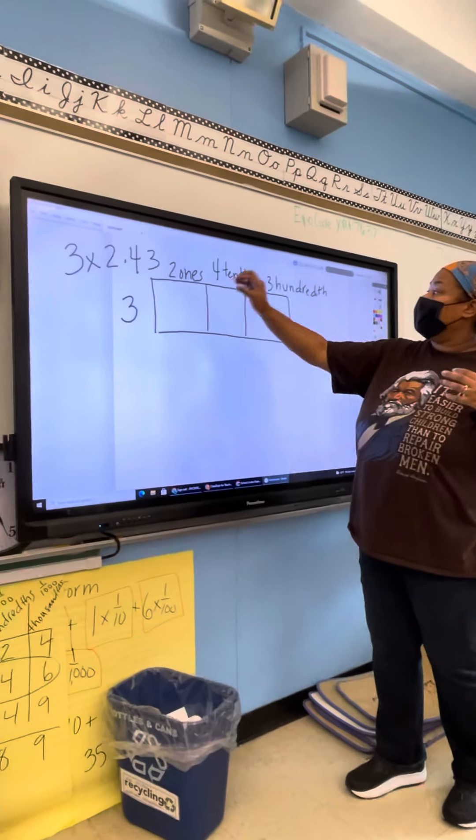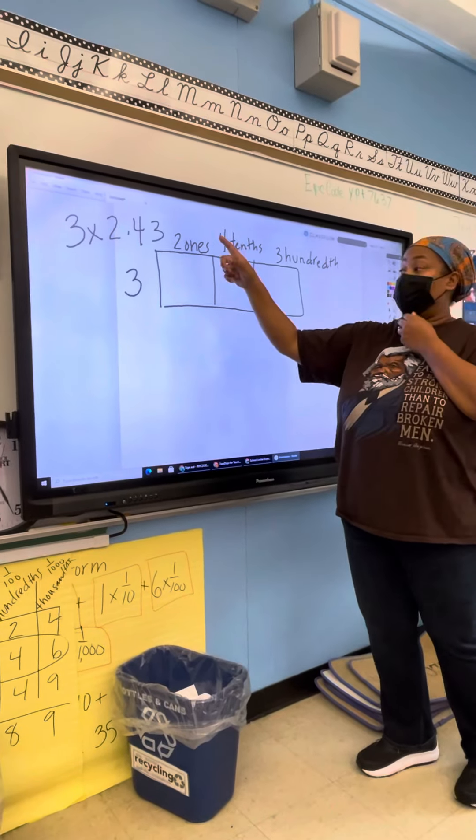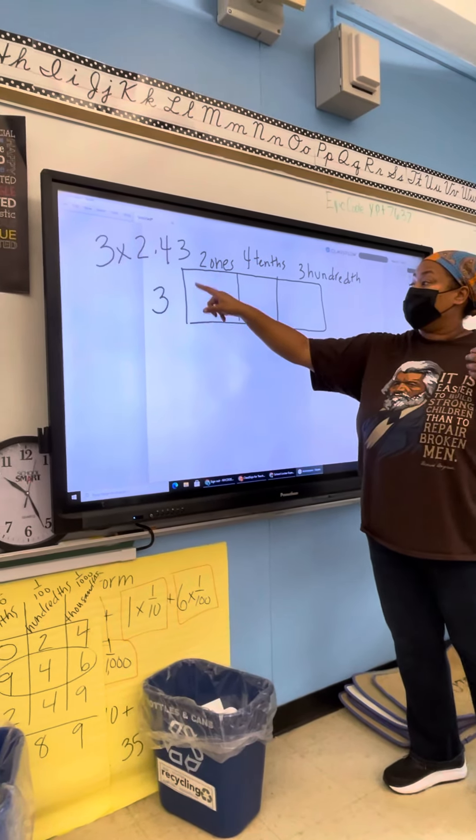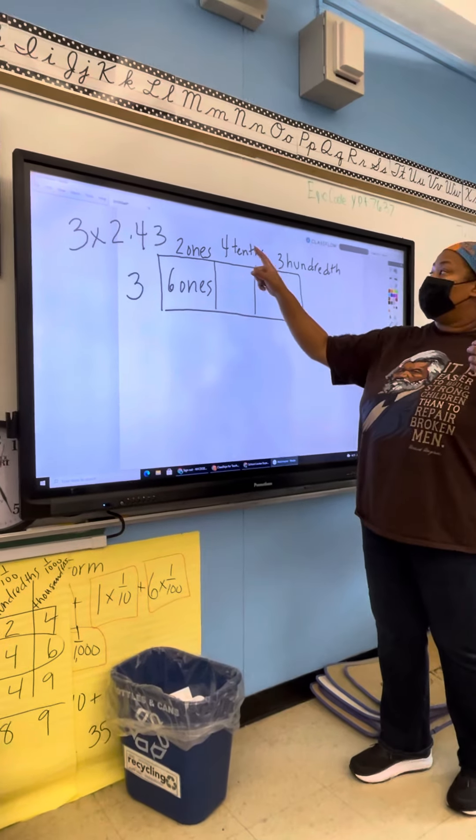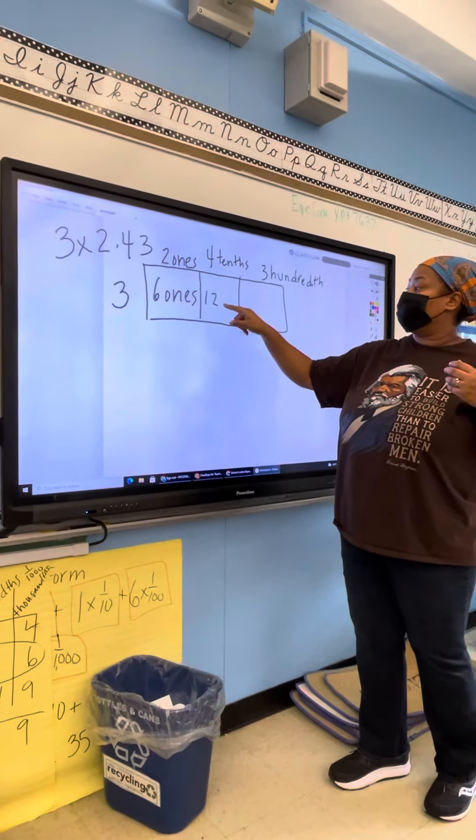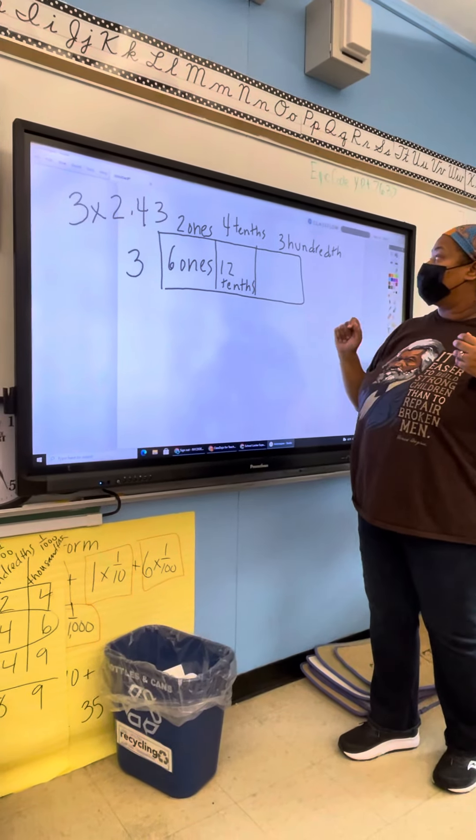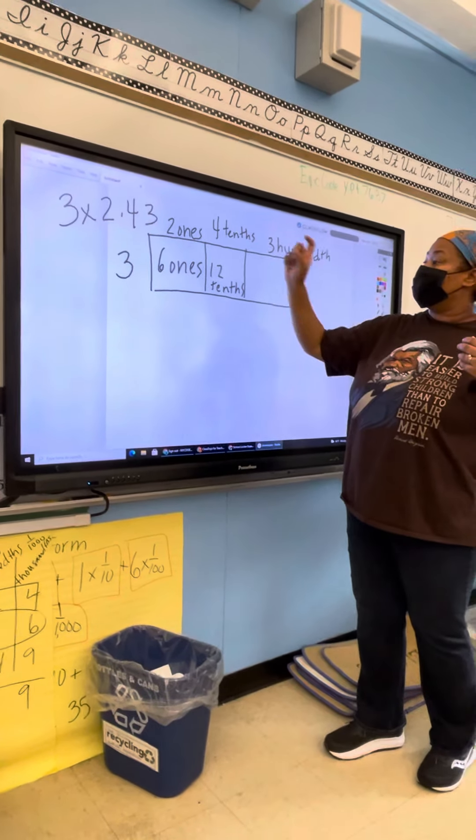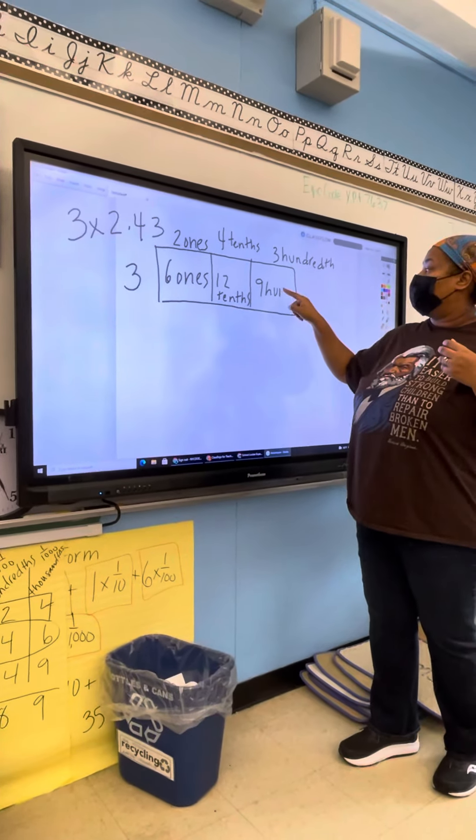I'm going to multiply each of these values that I listed on top by 3. So 2 ones times 3 is 6 ones. 4 tenths times 3 is 12 tenths. 3 hundredths times 3 would be 9 hundredths.